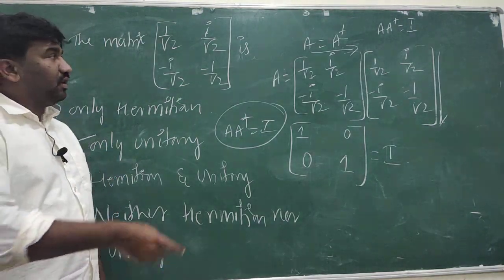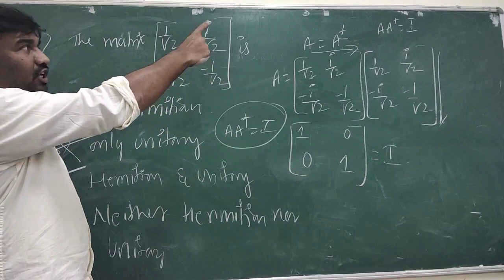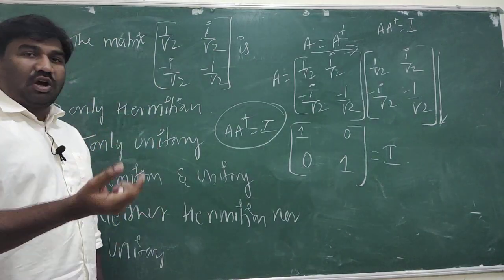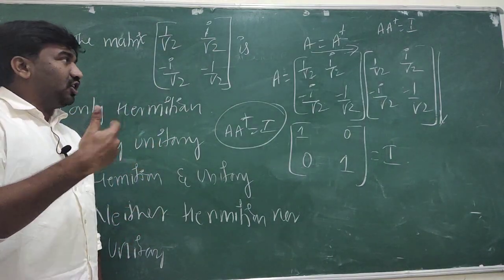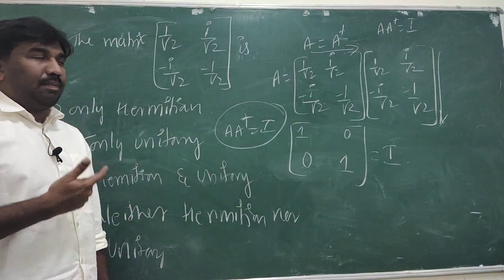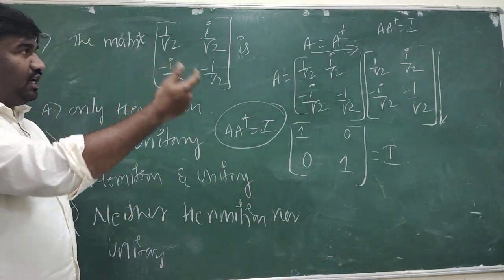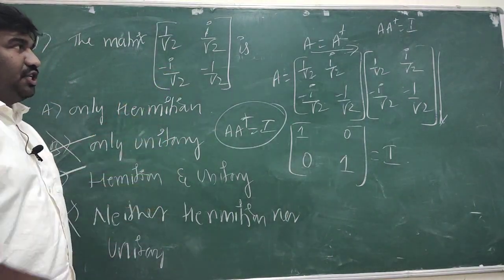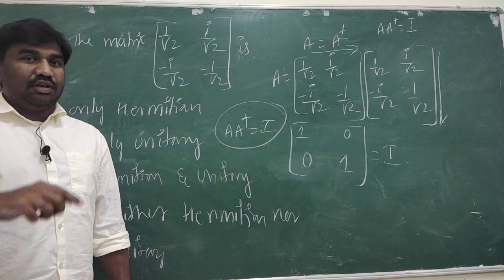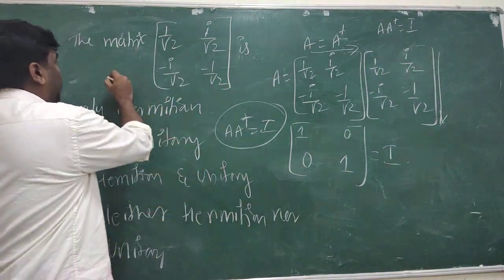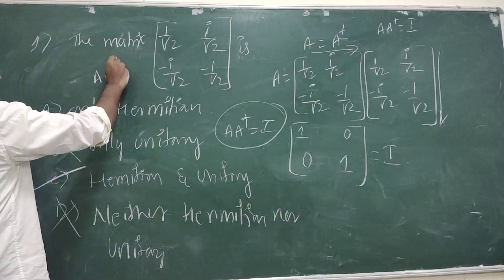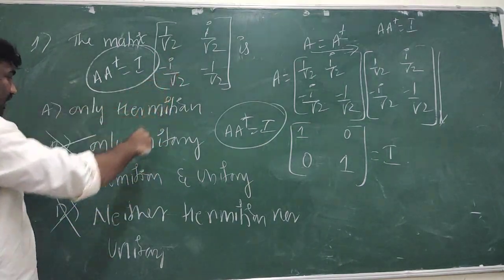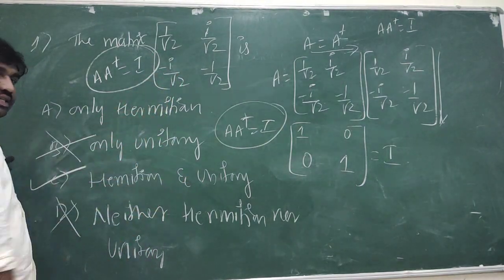To summarize: for a Hermitian matrix, check whether A = A†, where A† means first take the complex conjugate of the matrix and then interchange rows and columns. If A = A†, it is Hermitian. For unitary, compute A·A† — if it equals I, then it is a unitary matrix. The given matrix is both Hermitian and unitary.